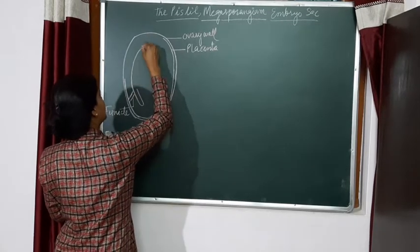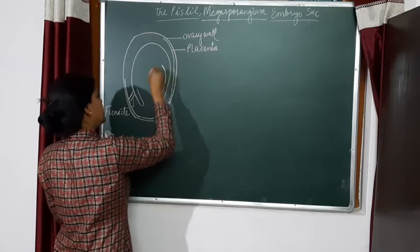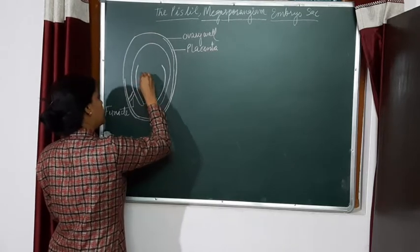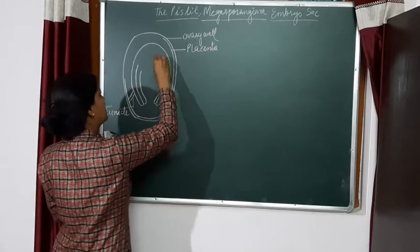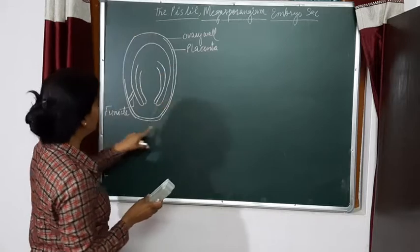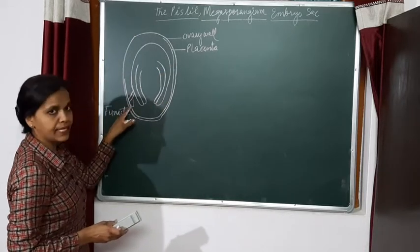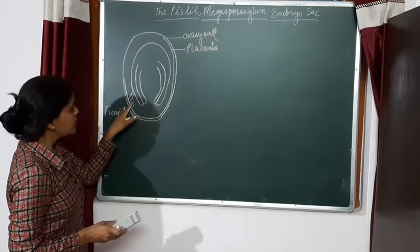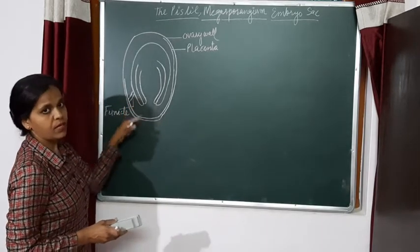And this structure is called as ovule. So you understood it? Outermost structure is the ovary wall, inner to it is the placenta. Then to placenta is the funicle, stalk-like structure, and to this is attached the ovule.